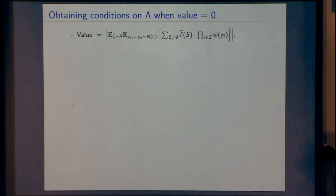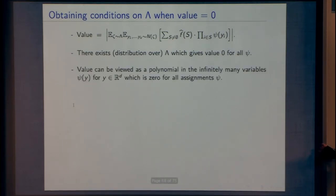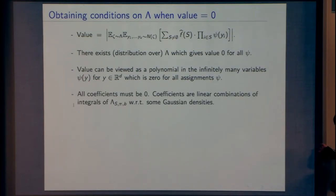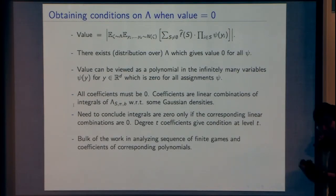This is my last slide. The value being zero means there exists a lambda, or distribution over lambdas, which gives value zero for all psi. You can view this value as a polynomial in infinitely many variables corresponding to values of psi at all points in R^d. If this polynomial is zero for all assignments, all coefficients are zero. The coefficients come out as linear combinations of integrals of these measures, and with some analysis you can conclude that if the integrals are zero with the right densities, then the linear combinations of measures themselves are zero. This last step takes about 30 pages to write down — that's the bulk of the work.